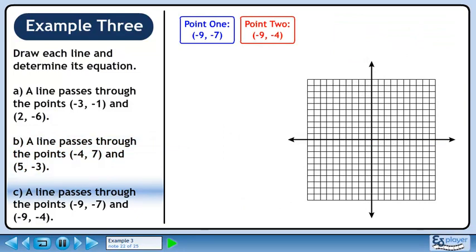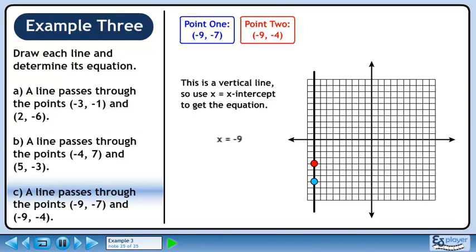In Part C, we'll find the equation of a line passing through the points and. Plot the two points and graph the line. This is a vertical line, so use x equals x-intercept to get the equation. The equation is x equals minus 9.